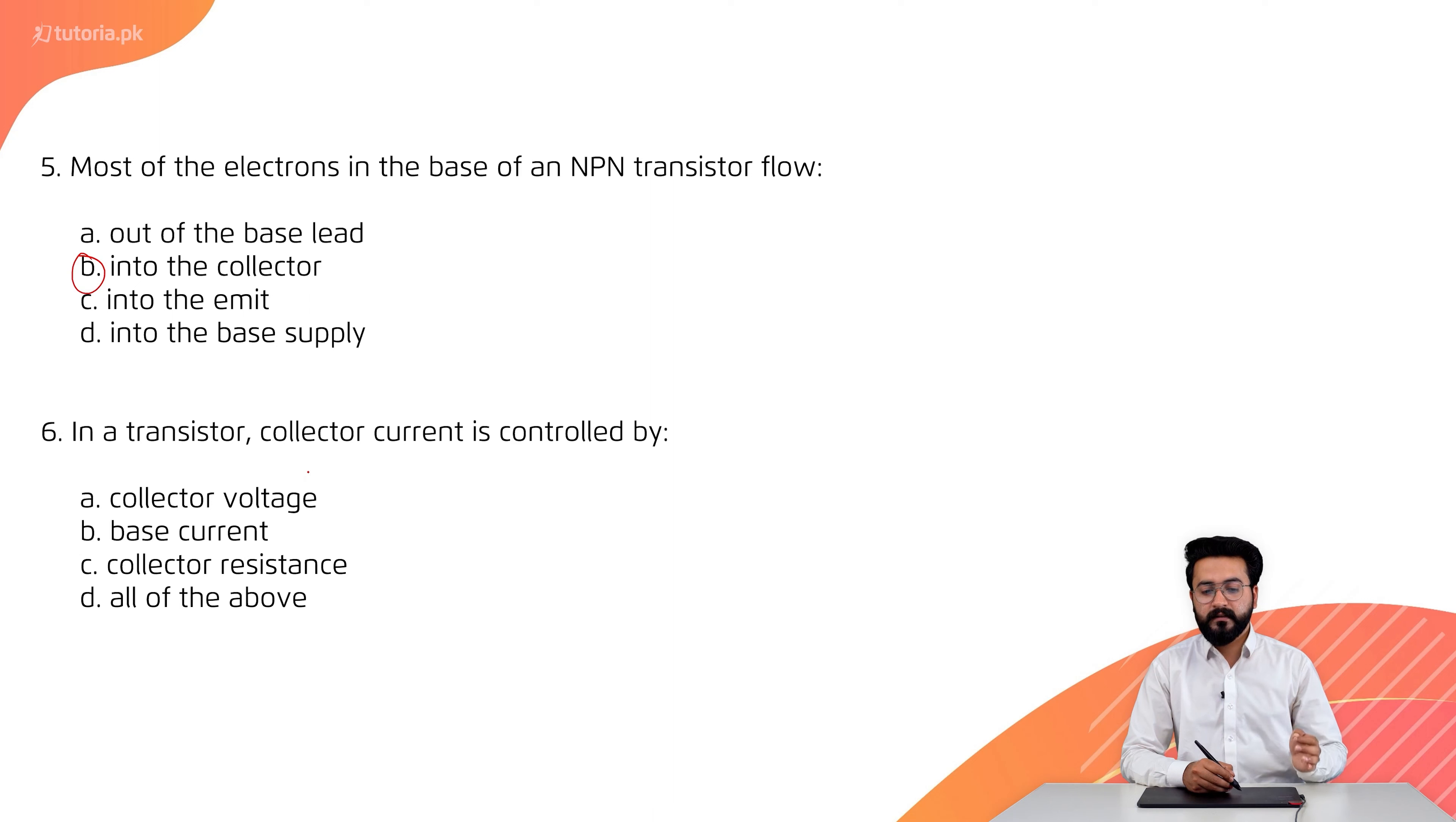Number 6 is, in a transistor, collector current is controlled by—the correct option is D, all of the above. All of the above means collector voltage can be controlled by base current and collector resistance.